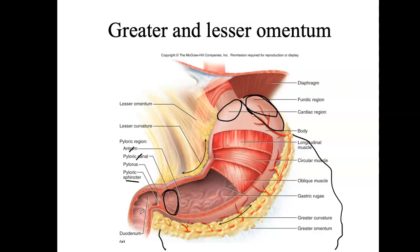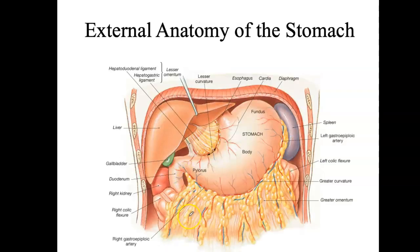The duodenum is the first section of the small intestine. On your list you also have the greater curvature and the lesser curvature — we already spoke of them in the context of the greater omentum and lesser omentum. Here's a nicer picture that shows the extension of that fatty greater omentum and a tiny bit of the lesser omentum, with the fundus, the body, and the pylorus nicely labeled.